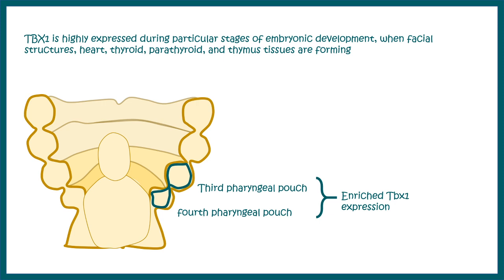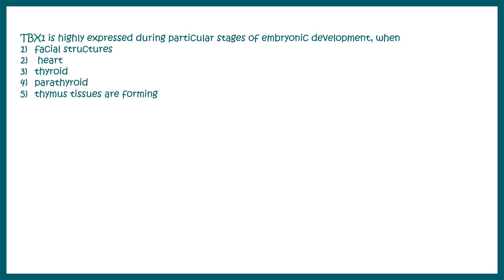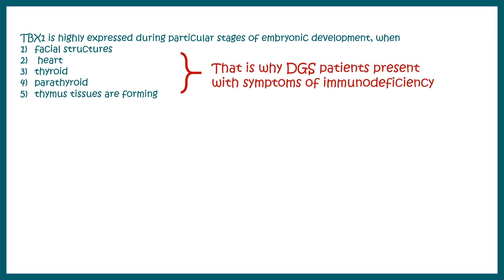In DiGeorge syndrome, TBX1 gene is missing. As a result, these structures are compromised. TBX1 is highly expressed in structures such as heart, thyroid, and parathyroid, and all of these structures would be somehow perturbed in the DiGeorge syndrome patient.